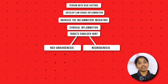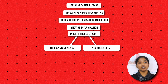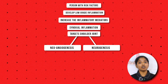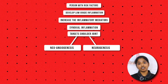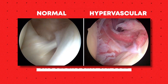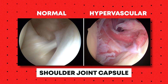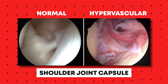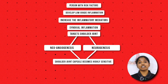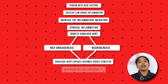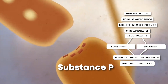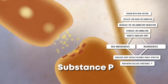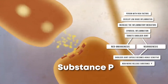The shoulder joint capsule has very least blood supply and nerve supply, but due to this neoangiogenesis and neurogenesis, the blood supply and nerve supply will be increased. The capsule becomes more and more sensitive, and the newly produced nerve fibers will produce substance P, which has a major role in transmitting pain signals.